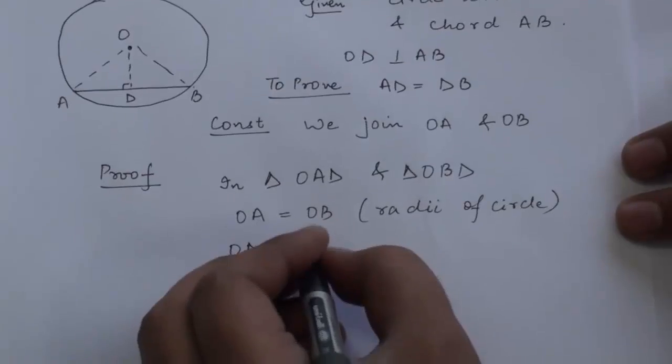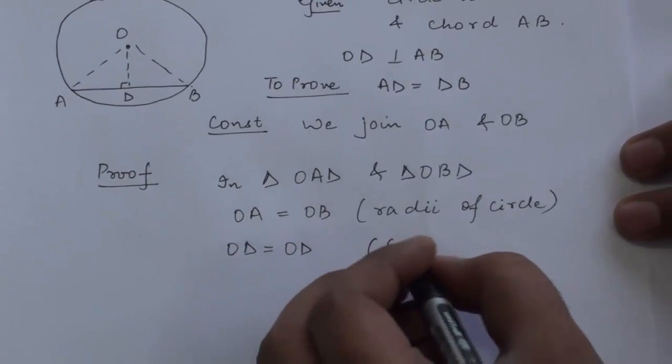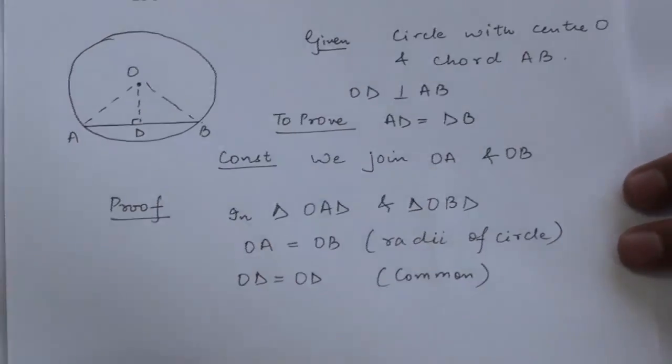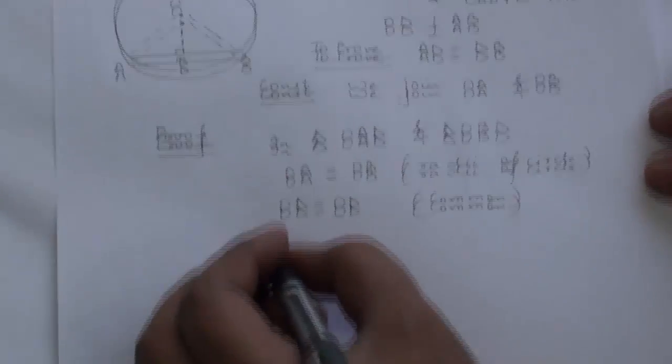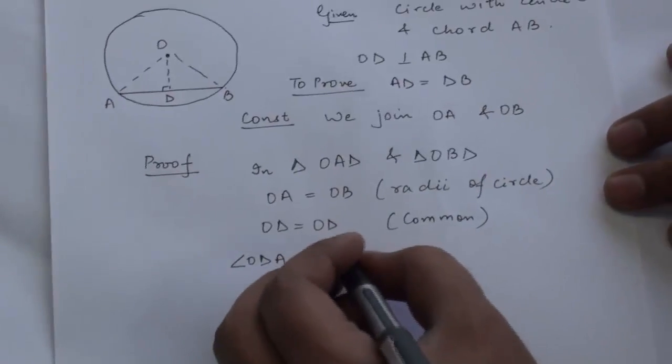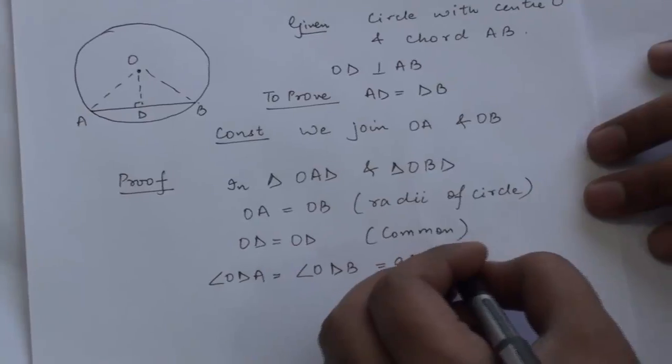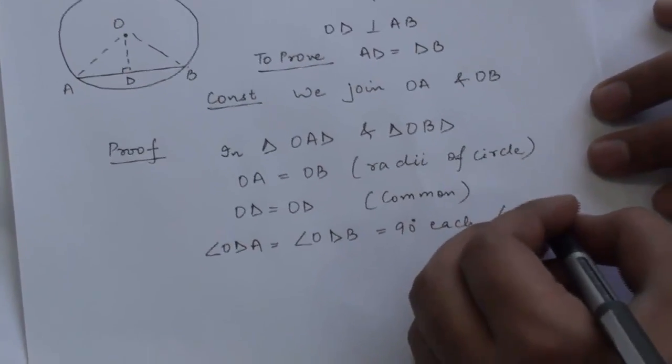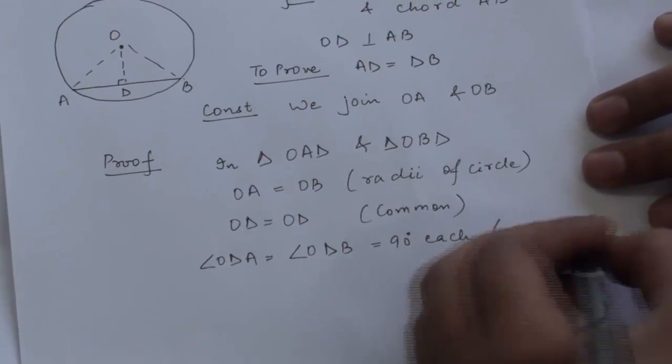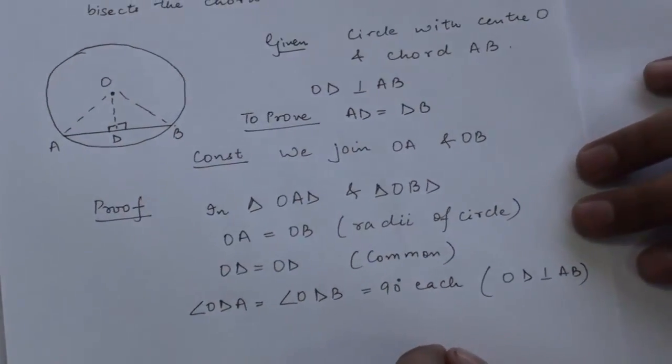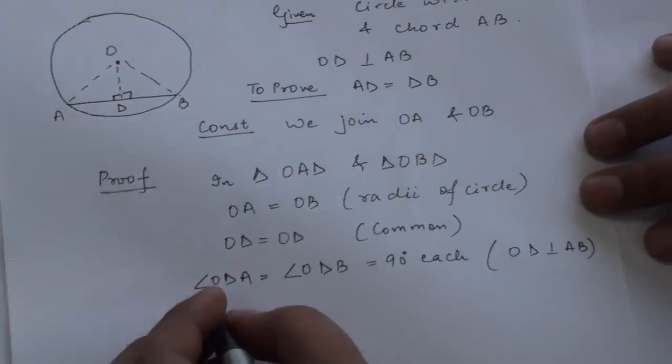Next we have: OD is equal to OD, common side. OD is common to both triangles. Next we have: angle ODA is equal to angle ODB is equal to 90 degrees each. So this angle and this angle are equal to 90 degrees each. Thus we have,